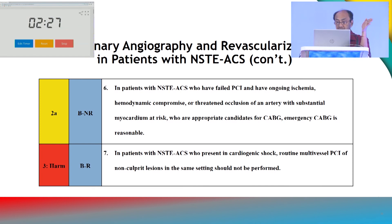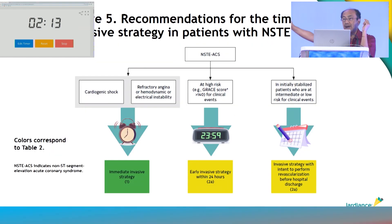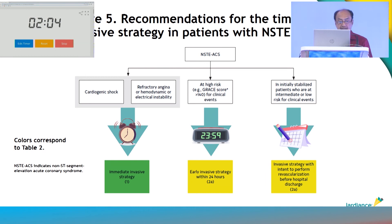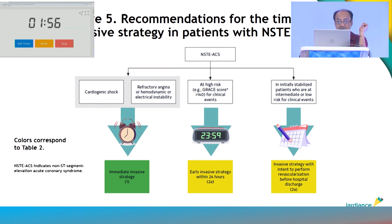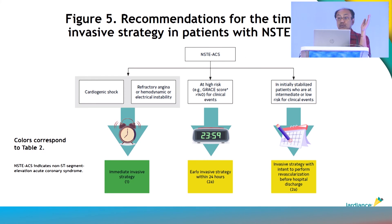This conclusion was drawn from the SHOCK trial and the CULPRIT-SHOCK trial, recently published in 2017. In the CULPRIT-SHOCK trial, those with multi-vessel disease who underwent single-session complete revascularization had higher MACE. So it is theoretically rational to treat only the culprit vessel in cardiogenic shock. High-risk patients go for early invasive strategy within 24 hours of admission. If the GRACE score is less than 140, they can wait and go for a selective, ischemia-guided approach.